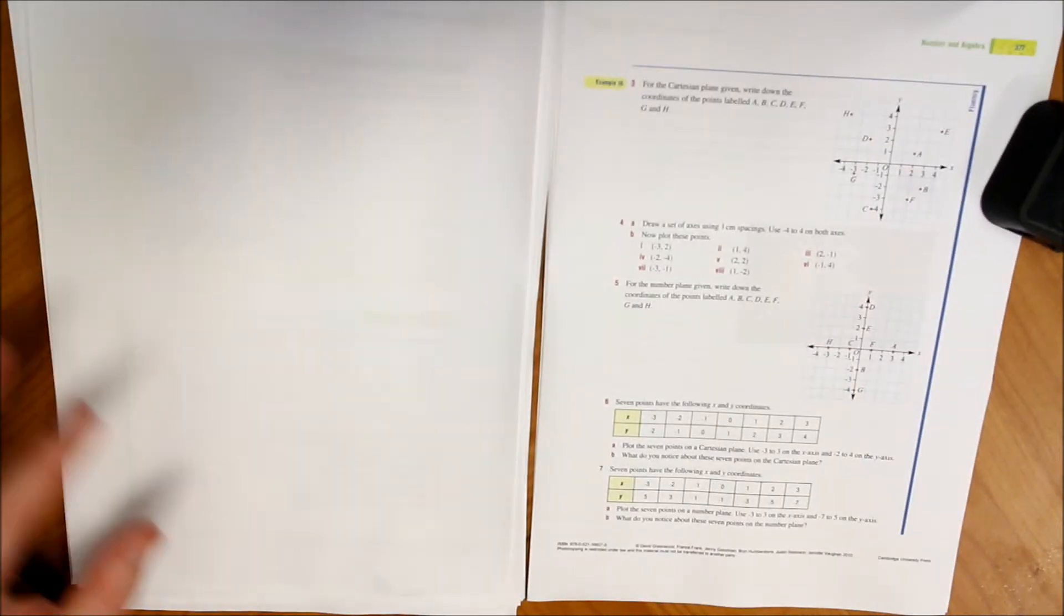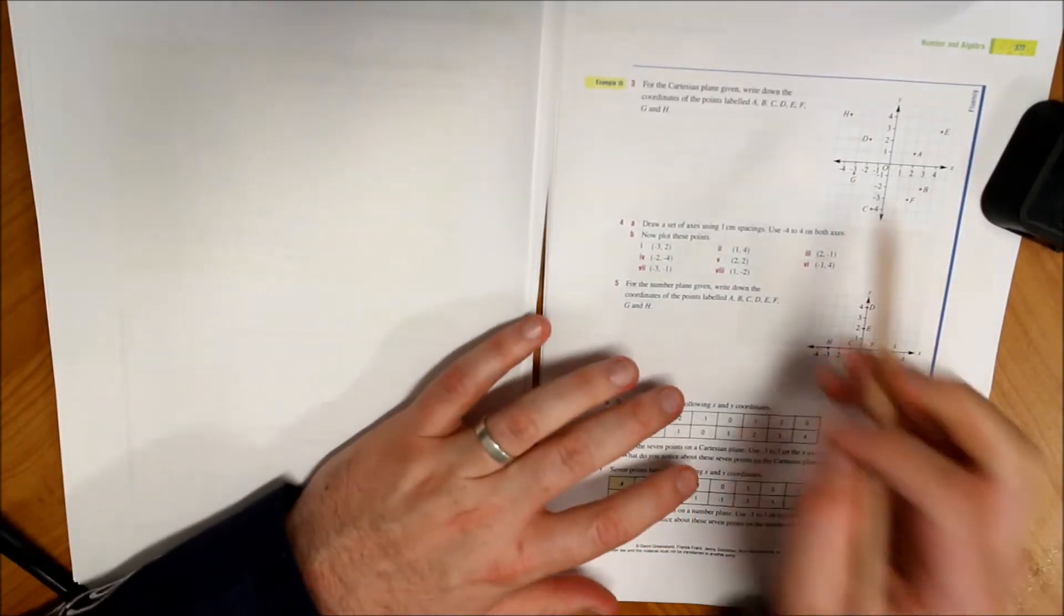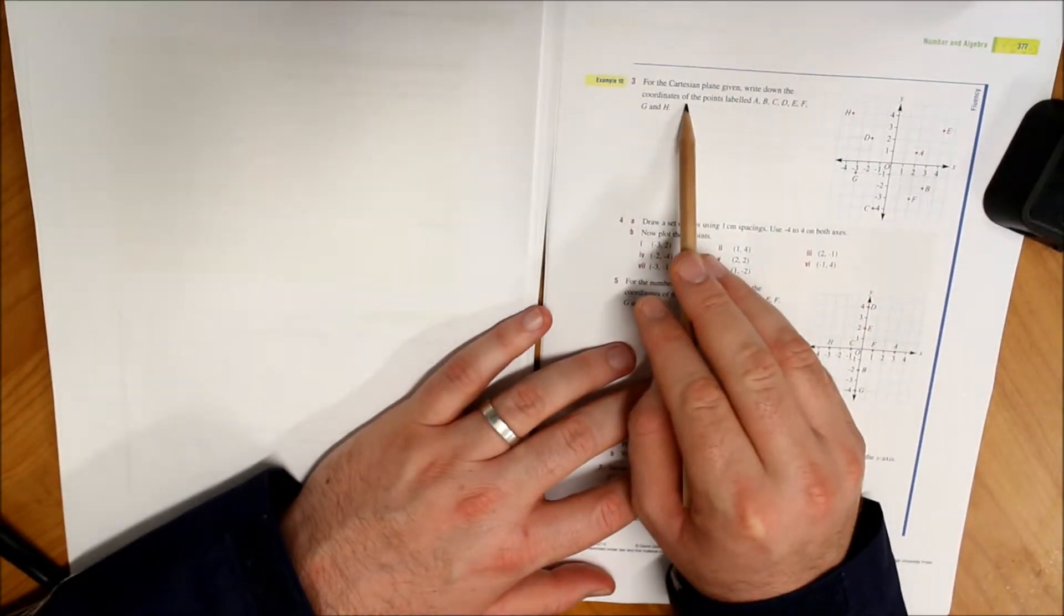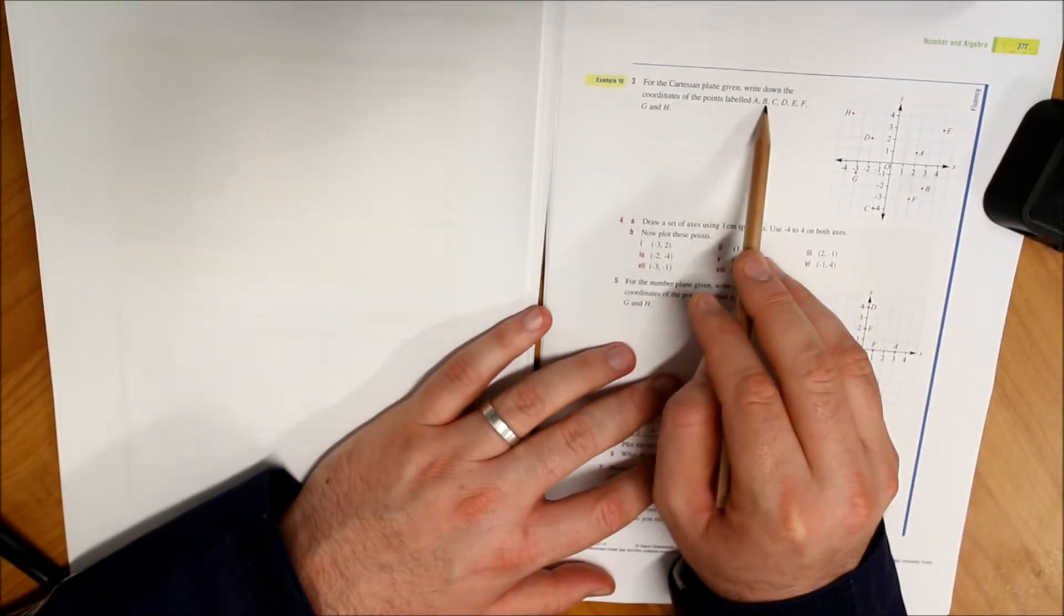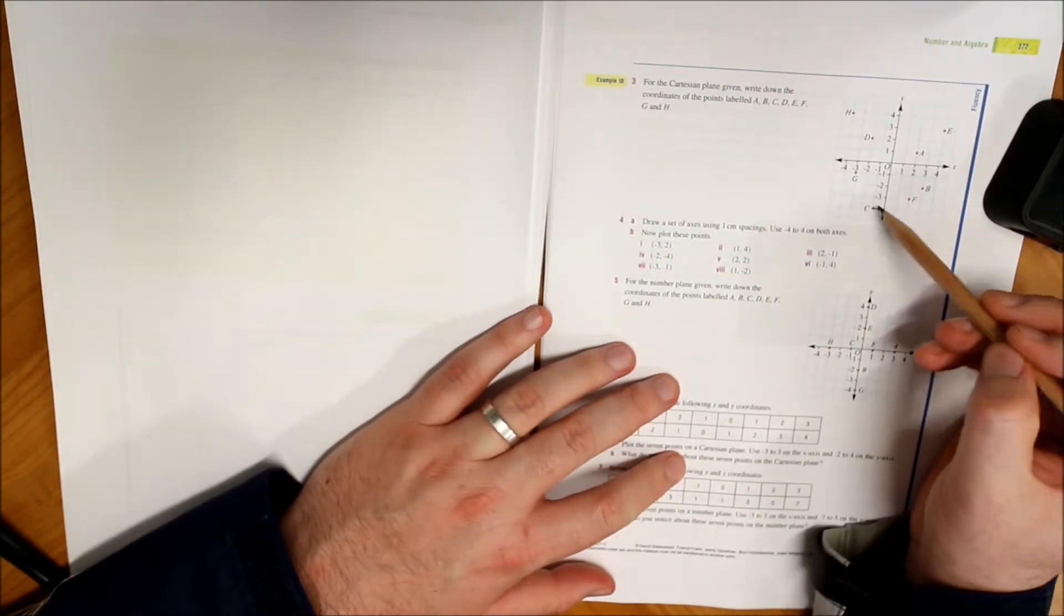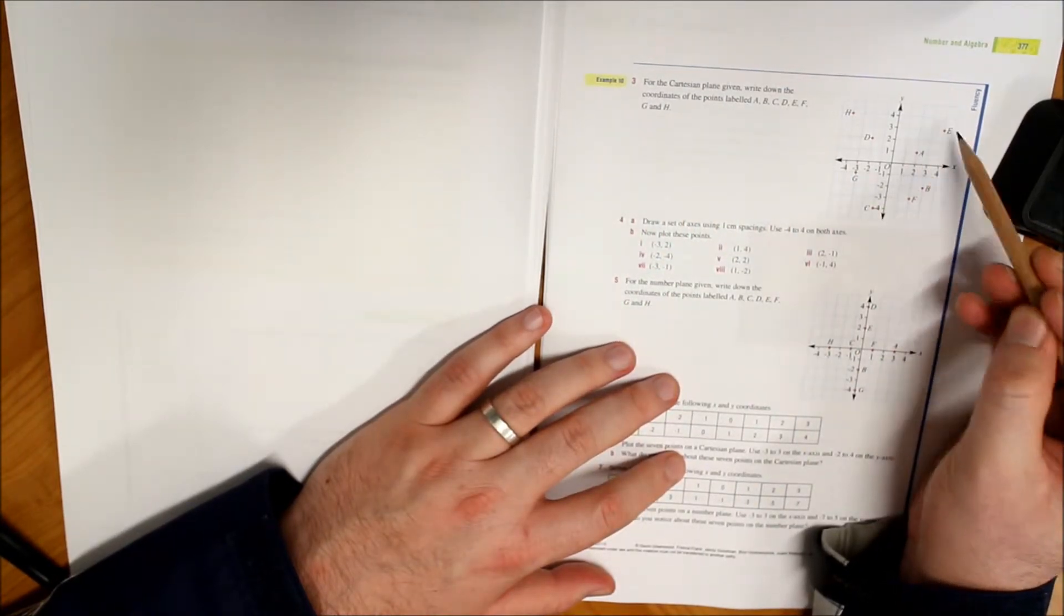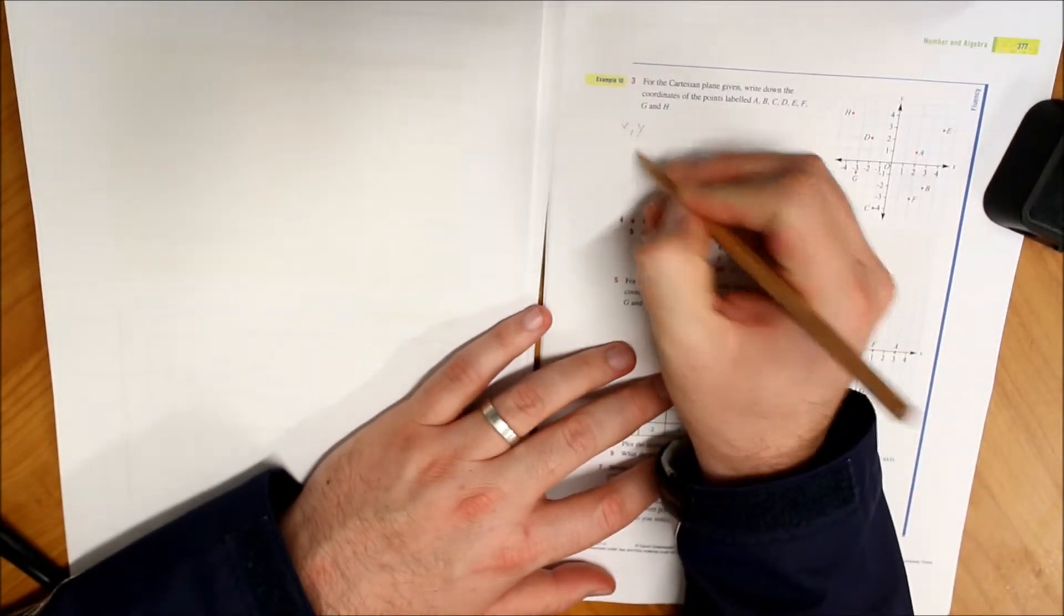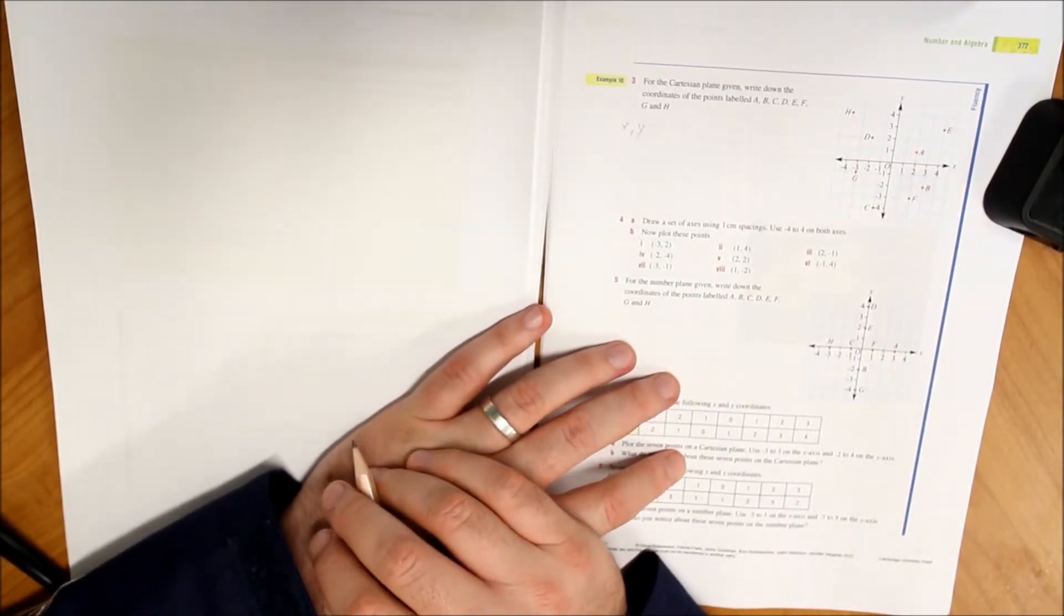Let's have a look at a few questions, shall we? All right, here it says: for the Cartesian plane given, write down the coordinates of the points labeled A, B, C, D, E, F, G, and H. Okay, so basically we've been given a heap of points. All right, now remember what do we have to say first? We have to say the x coordinate first and then the y coordinate.